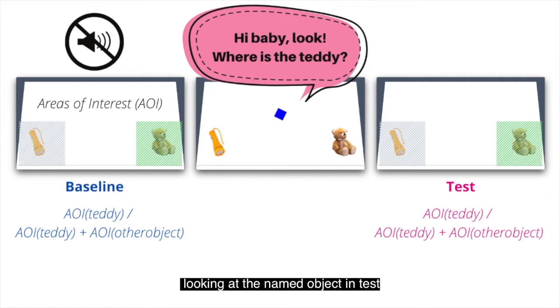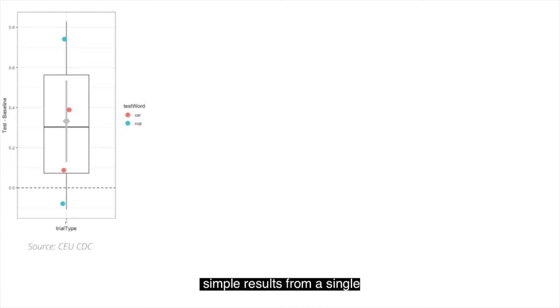If the result of this subtraction is positive, this would mean that the baby increased her looking to the named object at test. If this result is negative, it would mean that she decreased the looking to the object at test relative to the baseline. And if the value is around zero, that would mean that basically there was not much change between both of these test phases. What you see here are some sample results from a single participant from our recent study. This particular baby had four trials with two different familiar words, 'car' and 'cup', and you can see that on three out of these four trials she increased her looking to the named object at test relative to the neutral speechless baseline period.